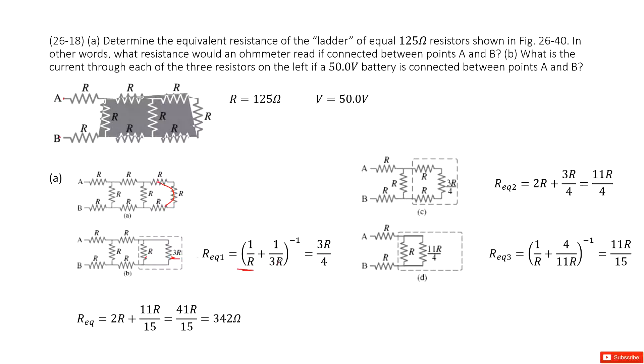Now we replace this box with 3R over 4. And in this box, you can see this is a series connection with R, 3R over 4, and R. So this is a series connection.